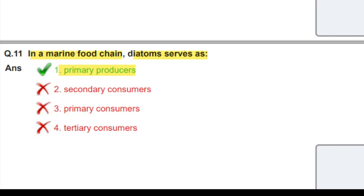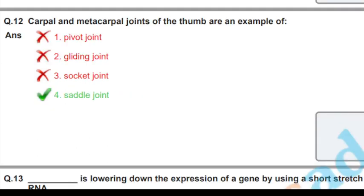Next question: the carpal and metacarpal joints of the thumb are an example of what? Carpal and metacarpal joints are an example of saddle joint.